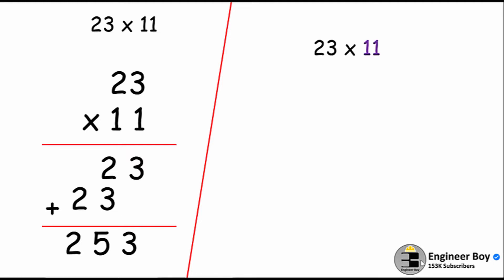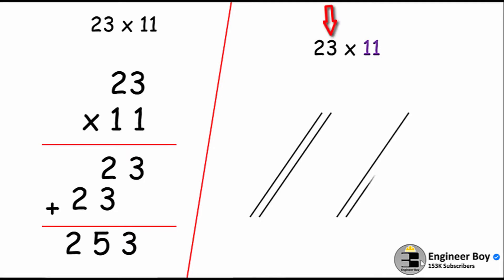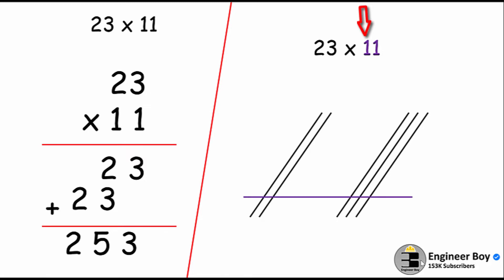Now I'll do the same thing by drawing lines — 23 times 11. For the digit 2, I'll draw two lines in one direction, then leave some space and draw three lines for the digit 3. Now I'll draw lines in the other direction for 11: for the first 1, one line starting from the bottom, then leave some space and draw another line in the same direction.